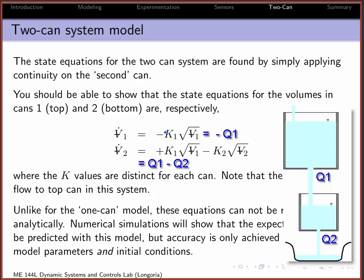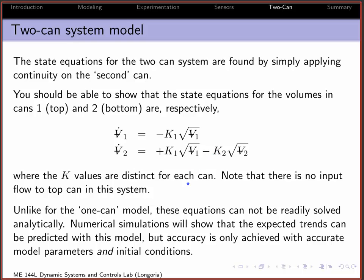Each of these K-values now, labeled 1 and 2, are for the top and bottom cans, and those are the values that you need to find experimentally. And while it's possible to solve one of these can systems by themselves, this is the top can. Note how the top can doesn't depend on volume 2, because you don't have flow going back up from 2 to 1.